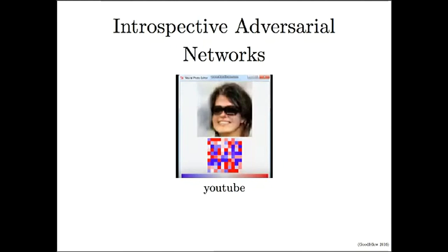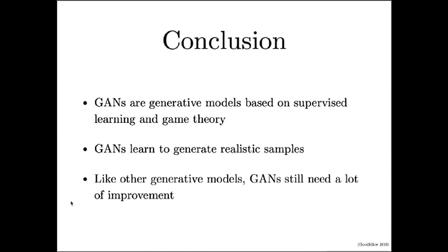In conclusion, generative adversarial networks are generative models based on supervised learning and game theory. They can learn to generate realistic samples. They still need a lot of improvement, but they're already useful for many different image modification tasks, and will probably continue to be useful for more tasks that require generating realistic samples in other domains.